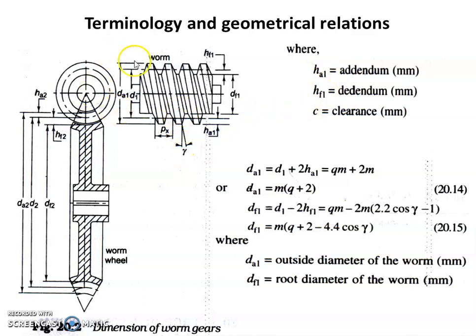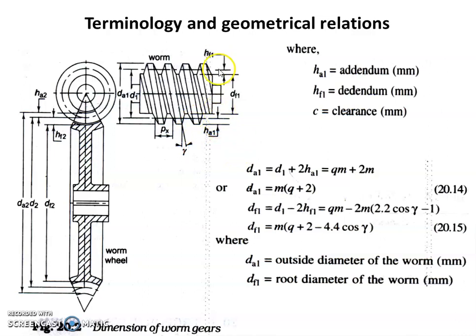Looking at the Worm figure, HA1 and HF1 are shown clearly. HA1 represents the addendum of the Worm and HF1 represents the dedendum of the Worm.